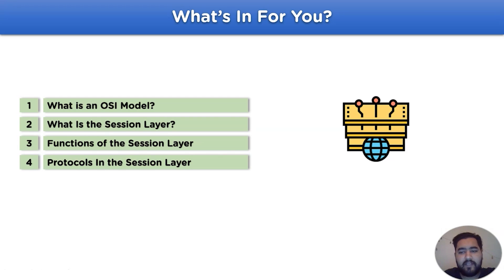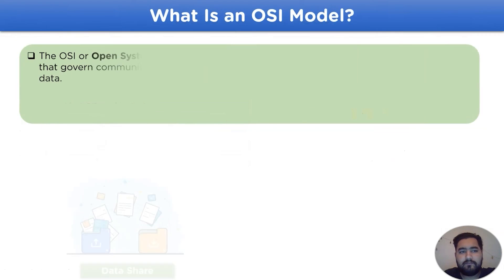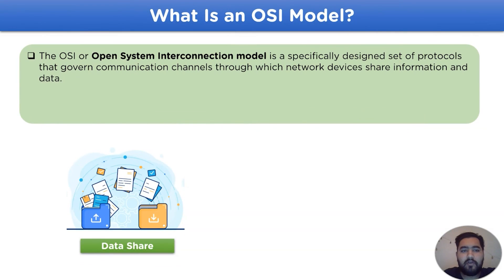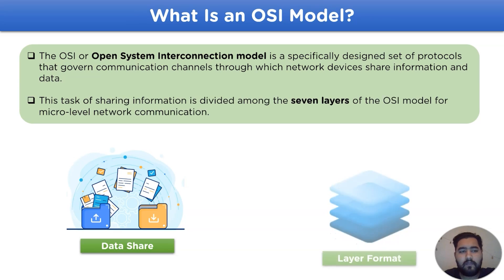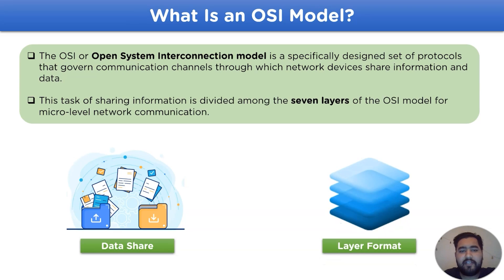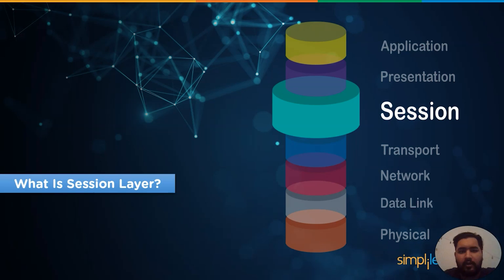Let's begin with the first topic: what is an OSI model. The OSI, or Open System Interconnection model, is a specifically designed set of protocols that govern communication channels through which network devices share information and data. This task of sharing data is divided among seven layers of the OSI model, which works at a micro level in a communication channel. Now let's move on to the core topic: what is the session layer.